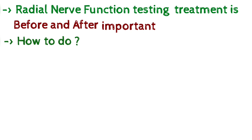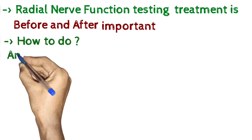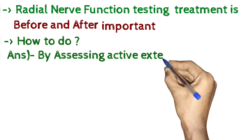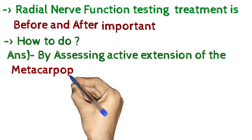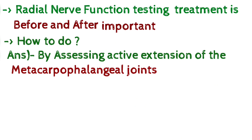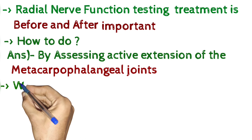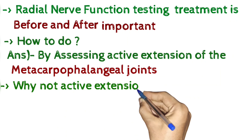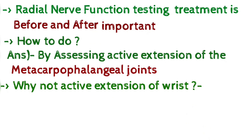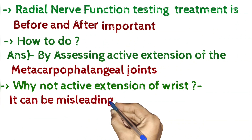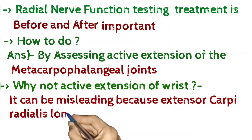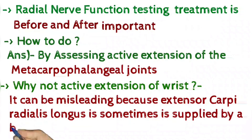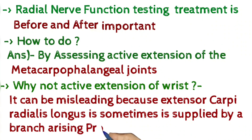Radial nerve function is tested by assessing active extension of the metacarpophalangeal joints. Active extension of the wrist should not be used, as it can be misleading because extensor carpi radialis longus is sometimes supplied by a branch arising proximal to the injury.